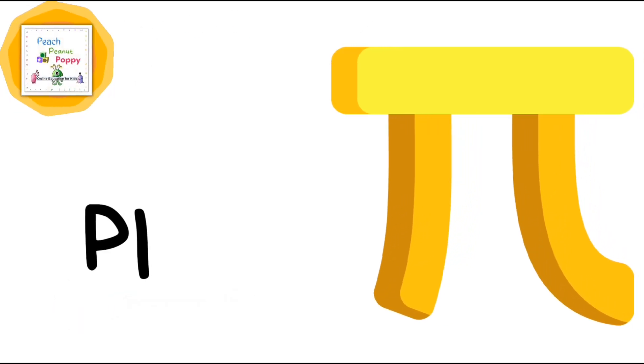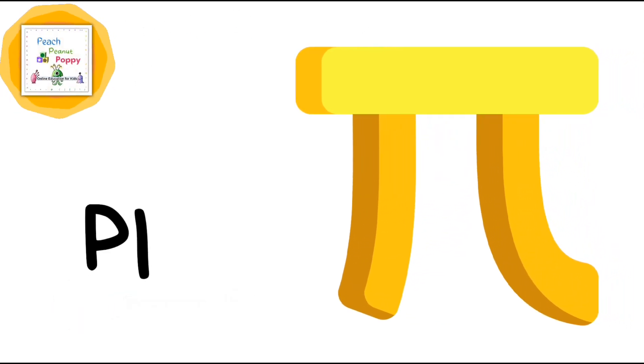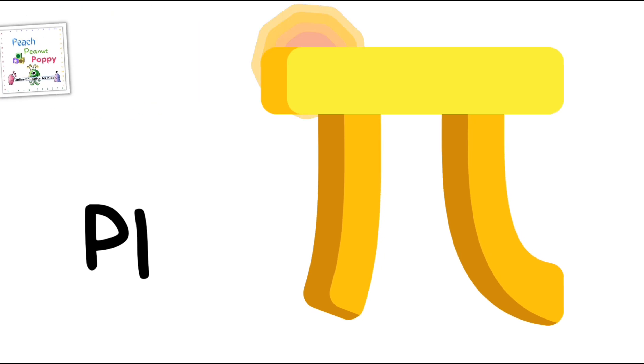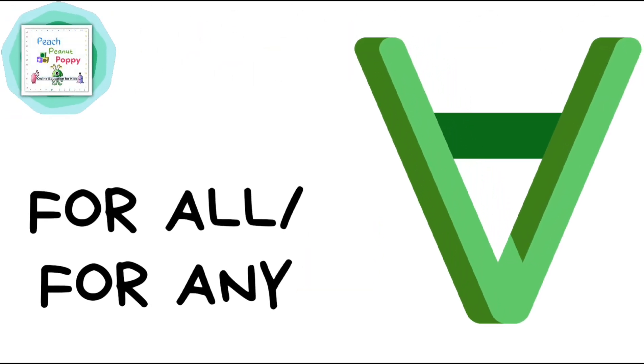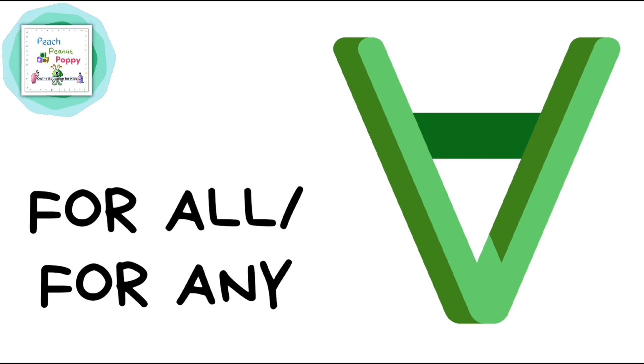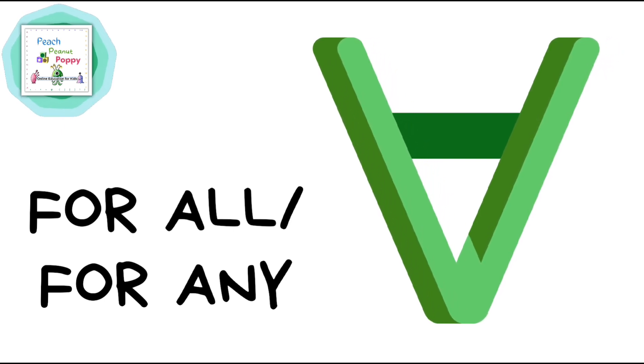The next sign is that of Pi. Pi. Then we have the sign for For all or for any. For all or for any.